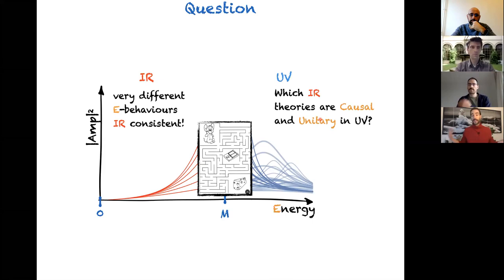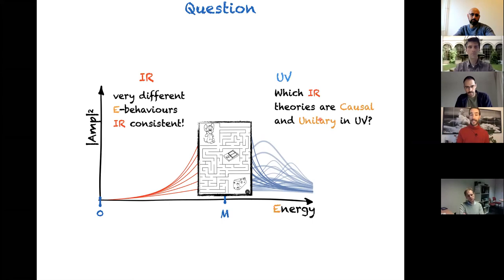The two ingredients I'll select from quantum theory are causality and unitarity. So I will ask: which effective theories are consistent with causality and unitarity in the UV theory?